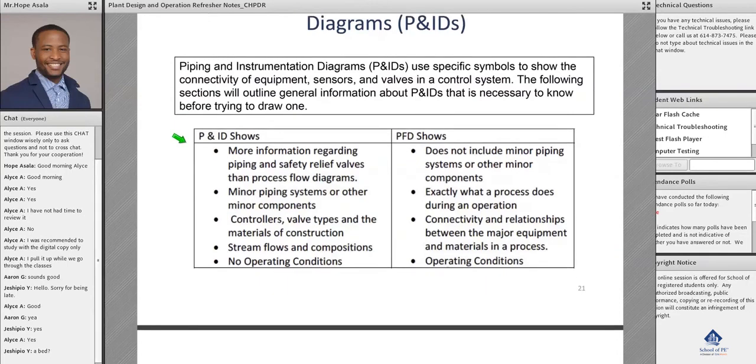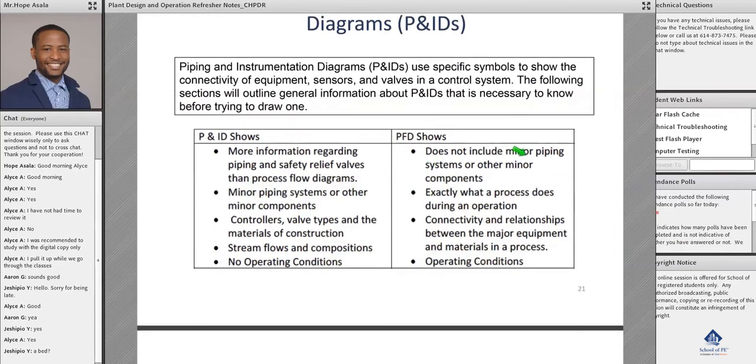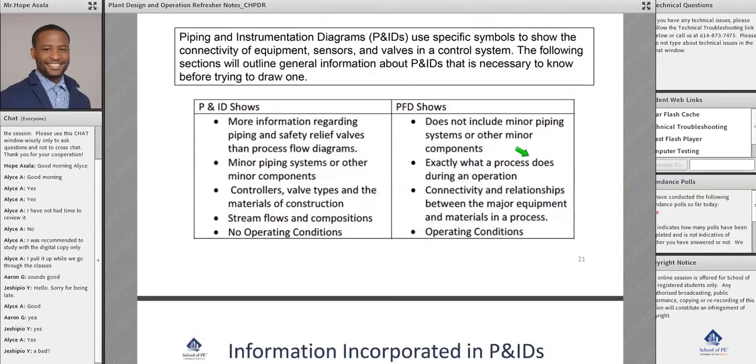The P&ID has more information regarding, in my opinion, the peripheral systems. It's going to tell you more about the piping and safety valves, and if there's controllers somewhere in the system. It's going to tell you more about the minor peripheral things in the system that we need to know and are important for safety, but would clutter the whole PFD diagram. So the PFD excludes minor piping components that are not really crucial.